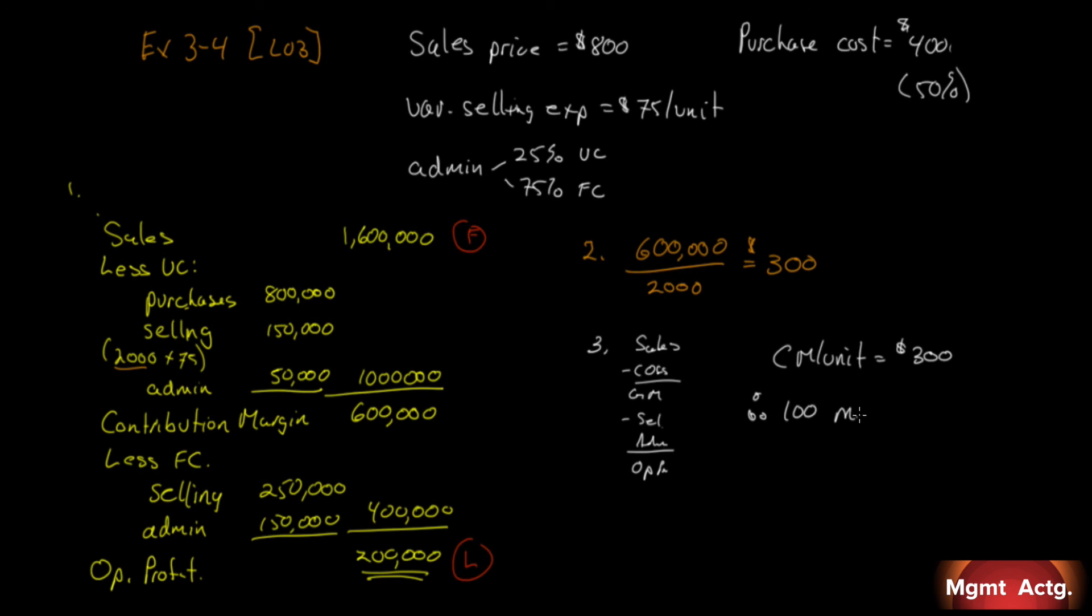Listen, it's this easy. Our contribution margin per unit we've already figured out was $300. Therefore, 100 more units adds $300 times 100 - $30,000 - to our contribution margin. The question states quite specifically since fixed costs do not change, the operating profit increases by the full $30,000.